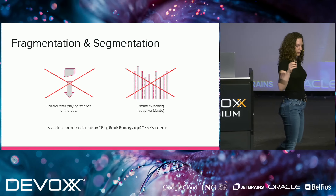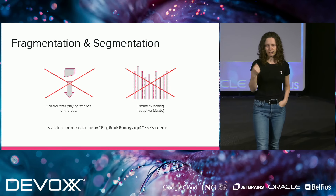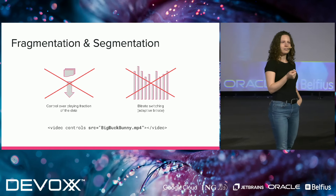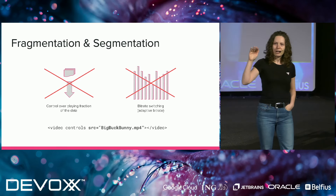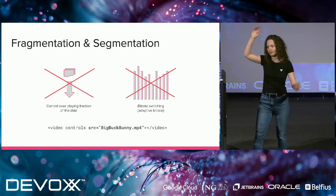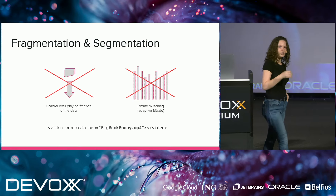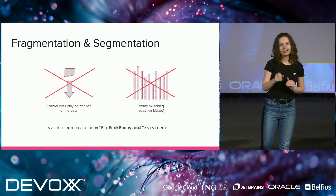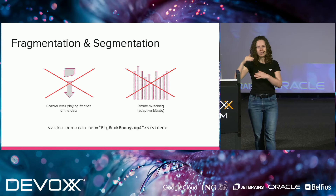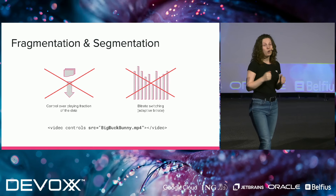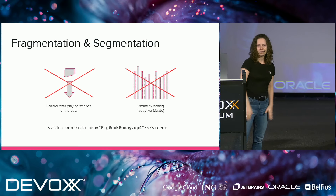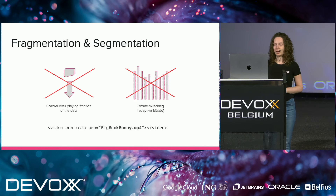The second issue is bitrate switching. To explain how important it is, here's a real-life example: imagine you're sitting on a train watching a video, and suddenly you enter a tunnel and your bandwidth drastically slows down. You may have experienced that. At that point you notice the video quality worsens — this is because content providers try to fit into your current bandwidth and switch between bitrates to still provide content without stalling, buffering, or completely stopping playback, giving you the best possible user experience.